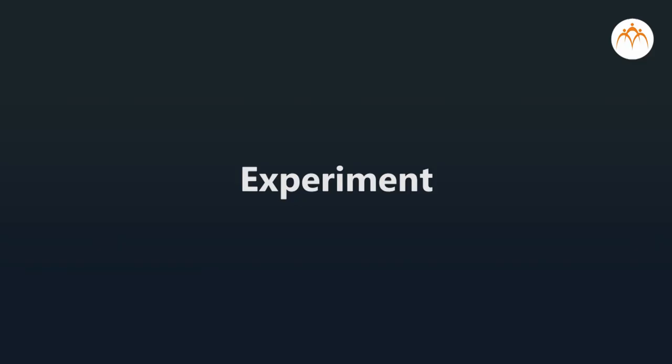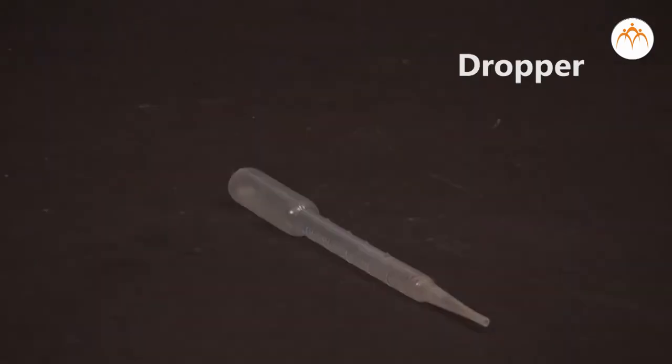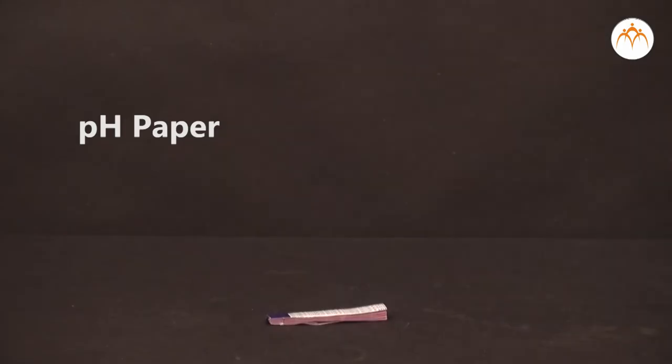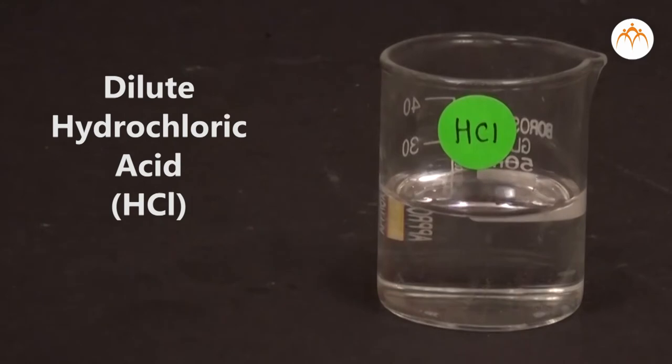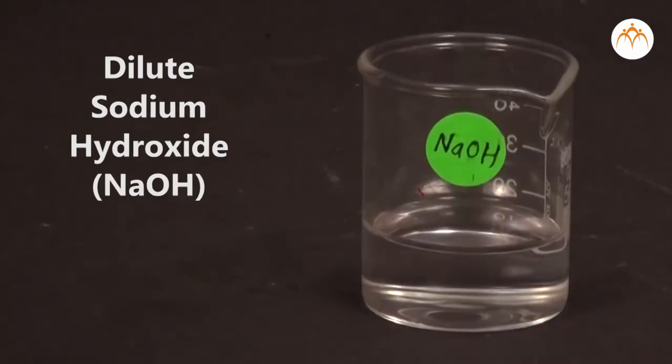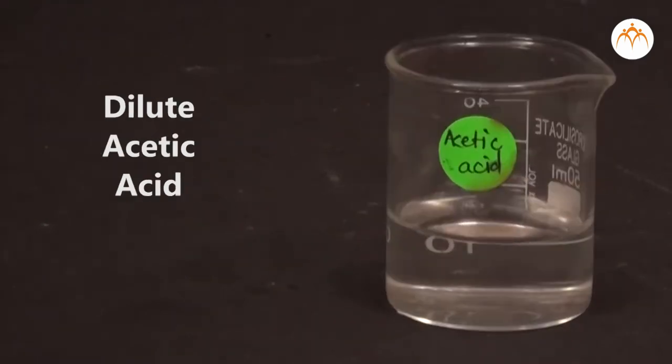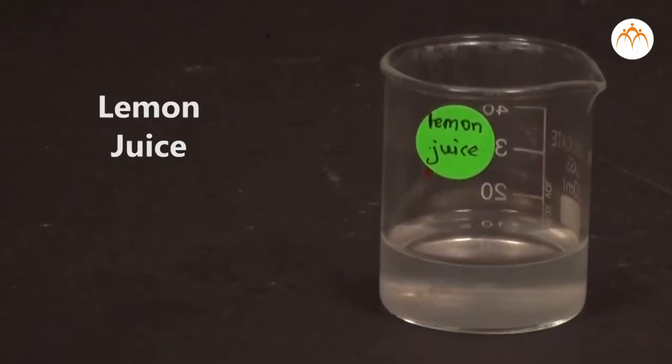We require test tubes, test tube stand, dropper, white glazed tile, pH paper, universal indicator, and distilled water. We also need dilute hydrochloric acid, solution of dilute sodium hydroxide, dilute acetic acid, lemon juice, and dilute sodium bicarbonate solution.